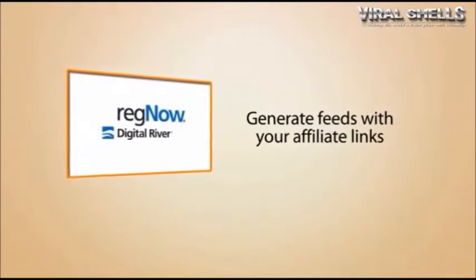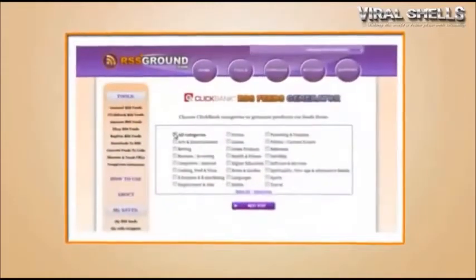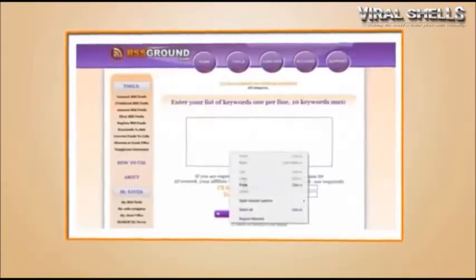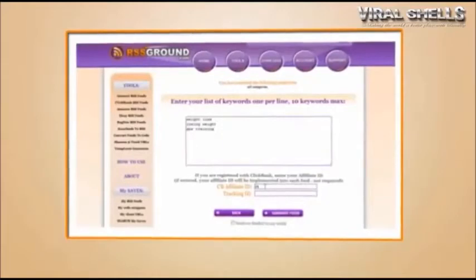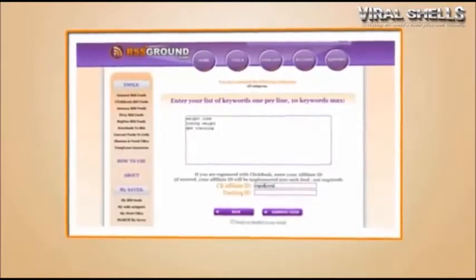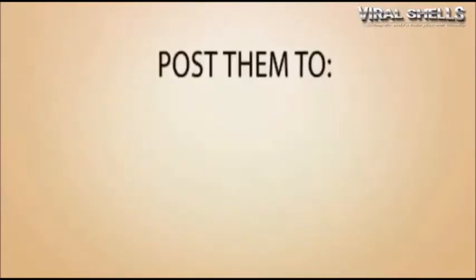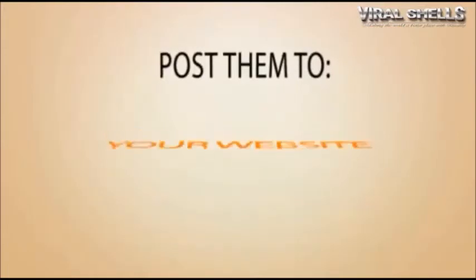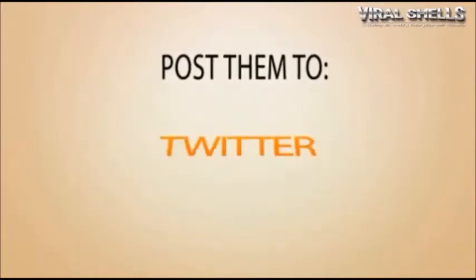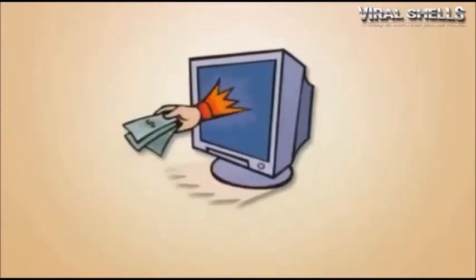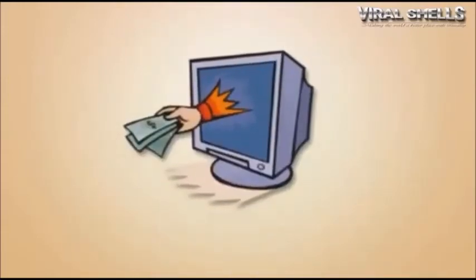The process is similar: type in a list of keywords, insert your affiliate ID, and get a list of affiliate RSS feeds with your affiliate ID already embedded in each link. Post them to your website, blog, Facebook account, Twitter, RSS directories, social bookmarking websites, and start collecting commissions.